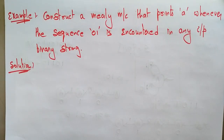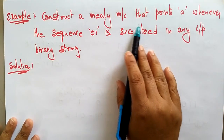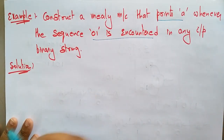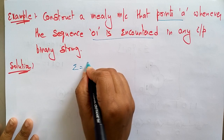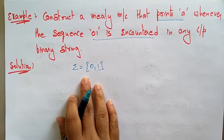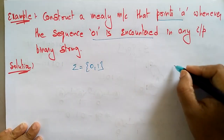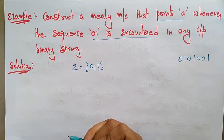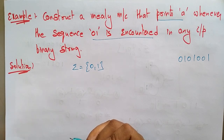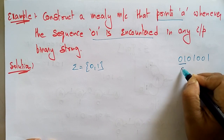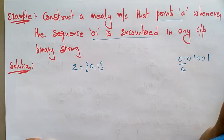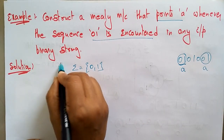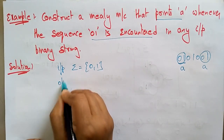Let's continue with examples of the Mealy machine. In this example, construct a Mealy machine that prints 'a' whenever the sequence '01' is encountered in any input binary string. The input alphabet is the set {0, 1} since it's a binary string, and the output alphabet is the set {a, b}.